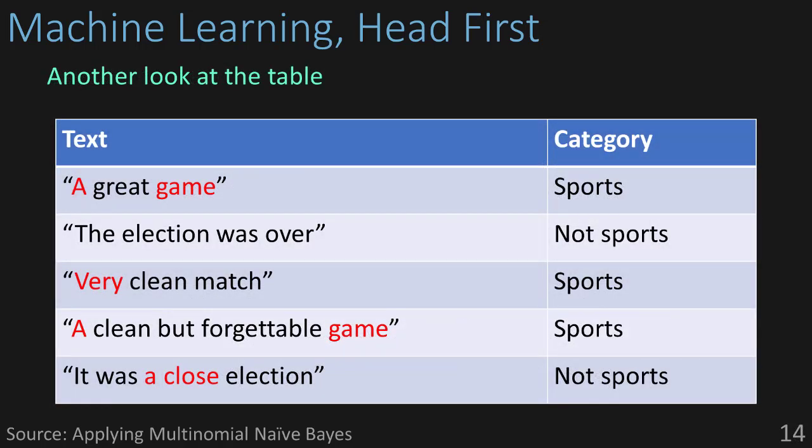From here, it just becomes a simple counting game. How many times does the word 'a' show up in sports? Twice. How many times does it show up in not sports? Once. How about 'very'? Once in sports, zero in not. 'Close'? Once in not sports. And 'game'? Twice in sports, zero in not.